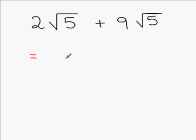If that's the case, you should only add the whole numbers together. 2 plus 9 is 11. And then write the square root 5 once only. Do not try to add 5 and 5. 11 square root 5 or 11 times square root 5 is the answer for this problem.